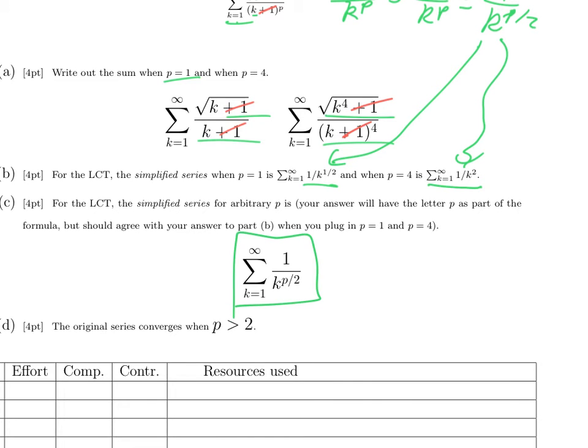In that case, this is a p series. The letter p is confusing, but the exponent is p over 2, so it's going to converge when p over 2 is greater than 1, which is to say when p is greater than 2.